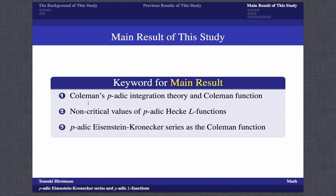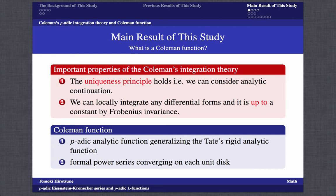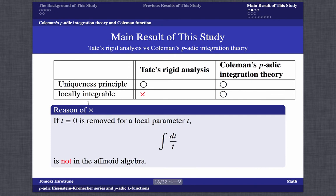What is important in Coleman's integration theory is that the uniqueness principle holds and we can locally integrate up to a constant. The Coleman function is, roughly speaking, a p-adic analytic function generalizing the Tate rigid analytic function and formal series converging on each unit disk. In both Tate rigid analysis and Coleman's p-adic integration theory, the uniqueness principle holds. But in Tate rigid analysis, we cannot locally integrate.